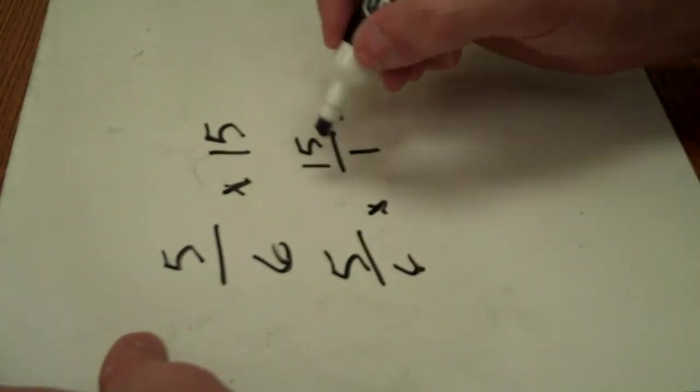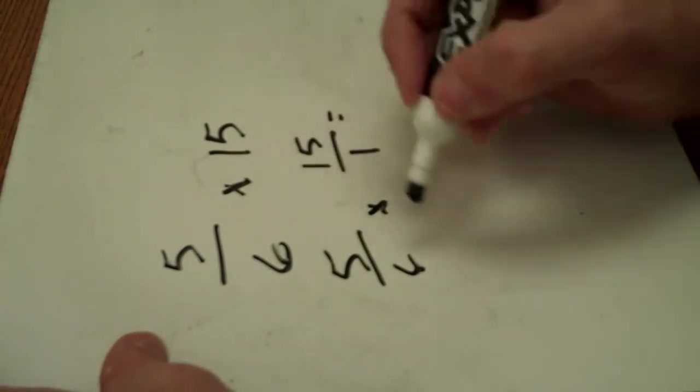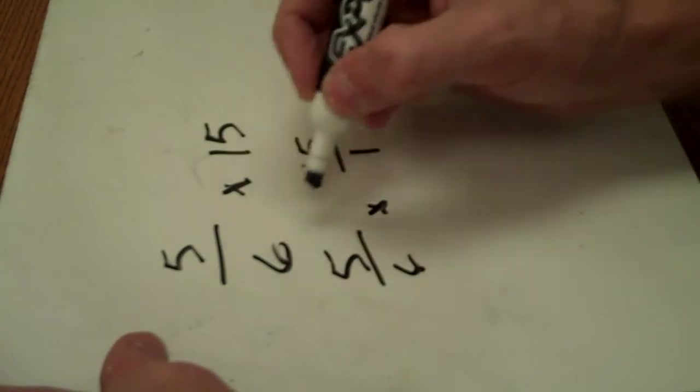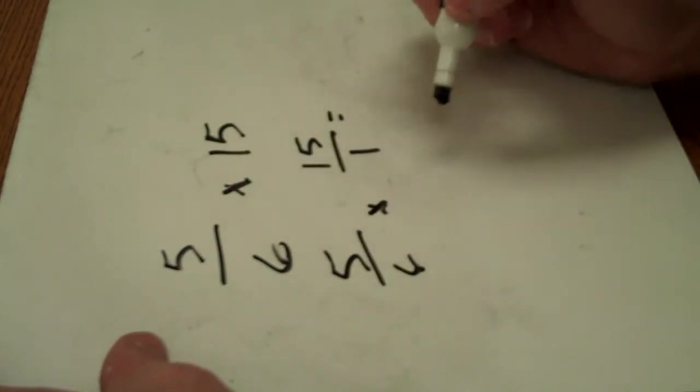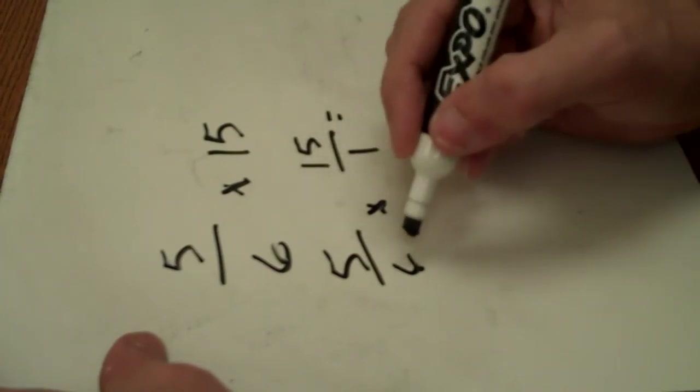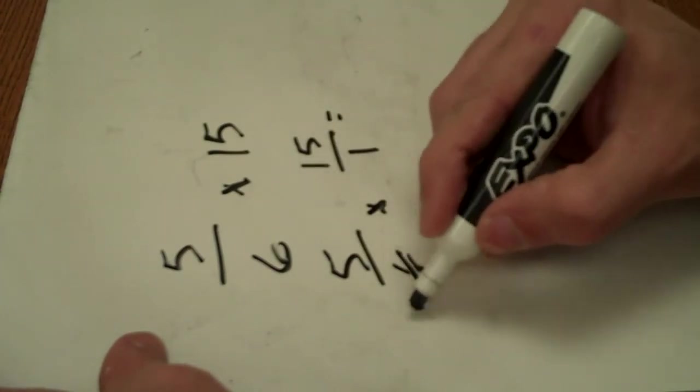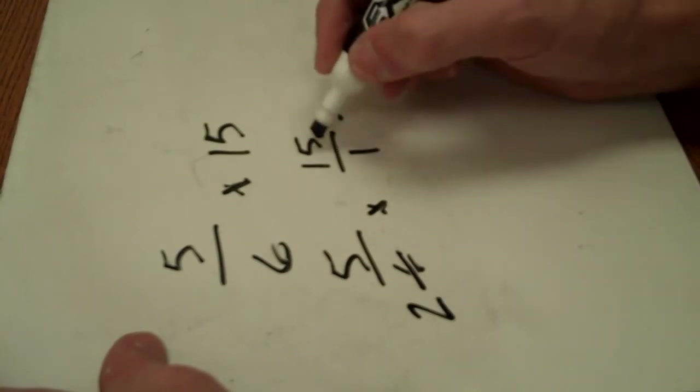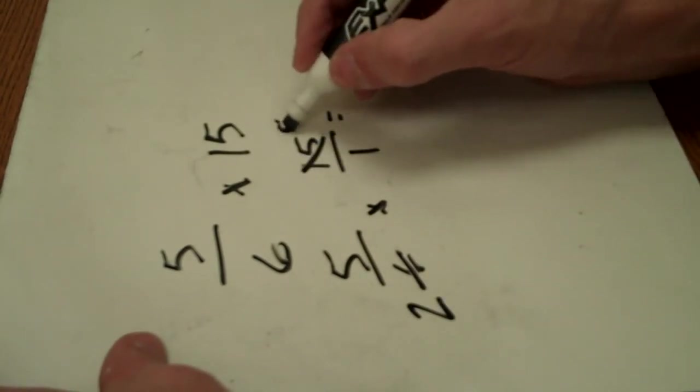Okay, now let's use a cross simplification trick if there's anything common going diagonally. 6 and 15, greatest common factor between those two. 3 will go into both of them. 3 will go into 6 and make that a 2. 3 will go into 15 and change that into a 5.